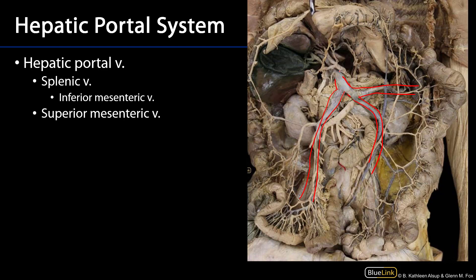This coming together is approximately at the vertebral level L1. It's usually just posterior to the neck of the pancreas. And the portal vein is joined by several elements of vasculature within the hepatoduodenal ligament.